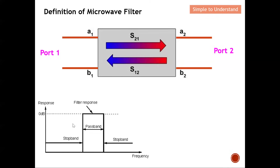For a band pass filter example: at the lower frequency stopband, signals traveling into the input port will not appear at port 2. In the passband frequency range, signals will be allowed to propagate and appear at port 2. For the upper stopband, the higher frequency signals propagating through the filter will be stopped and will not appear at port 2. This is a straightforward definition of how a filter operates across its passband and stopbands.